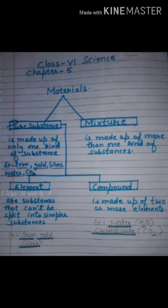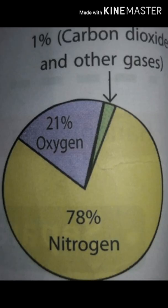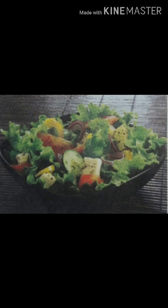Next is mixture. Mixtures are made up of more than one kind of substance. Examples are seawater, air, soil, and salad — they are all mixtures. You must be thinking how seawater and air are mixtures. Seawater contains water, salt, fine sand, and so many other substances — that's why it is a mixture. In the same way, air is also a mixture of many gases: nitrogen 78%, oxygen 21%, and carbon dioxide and other gases 1%. That's why it is called a mixture. Similarly, salad is also an example of a mixture.